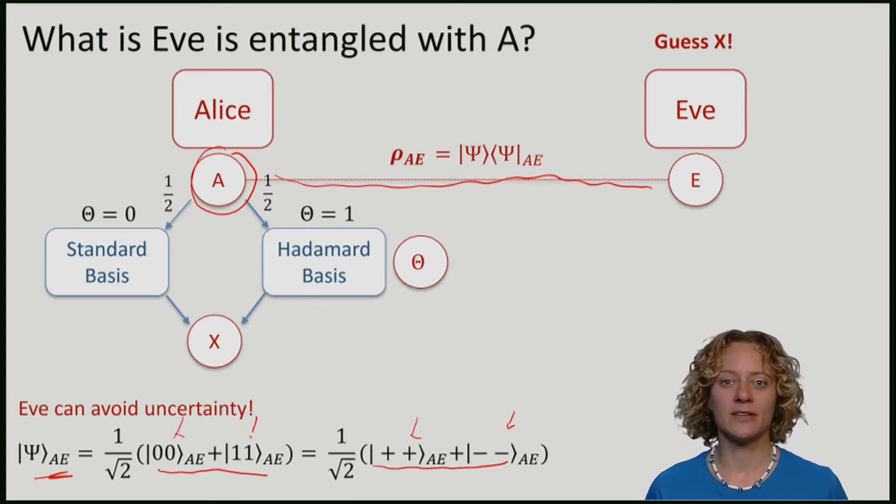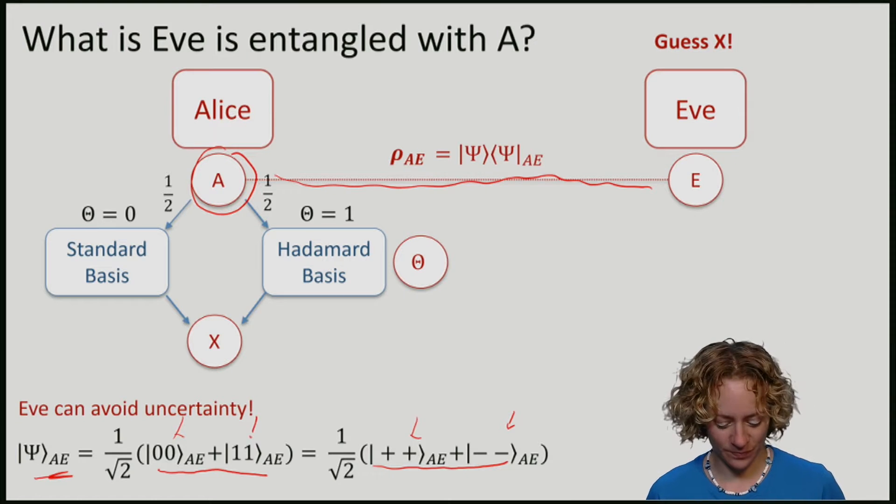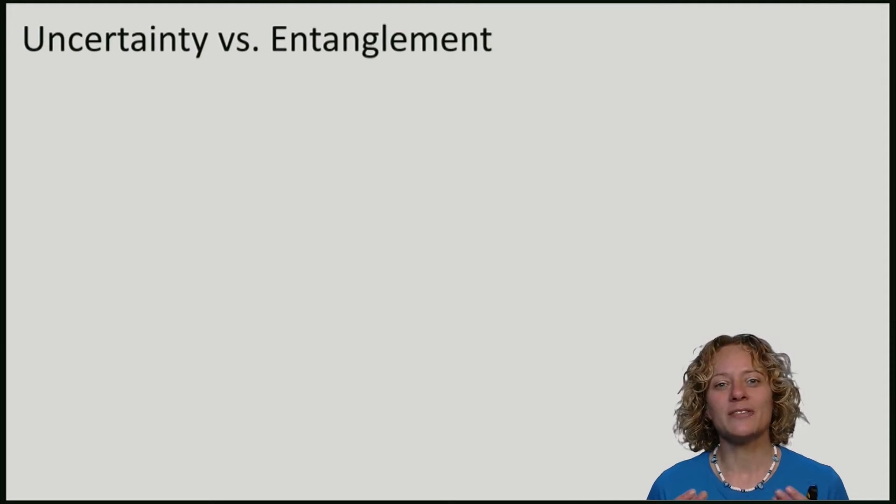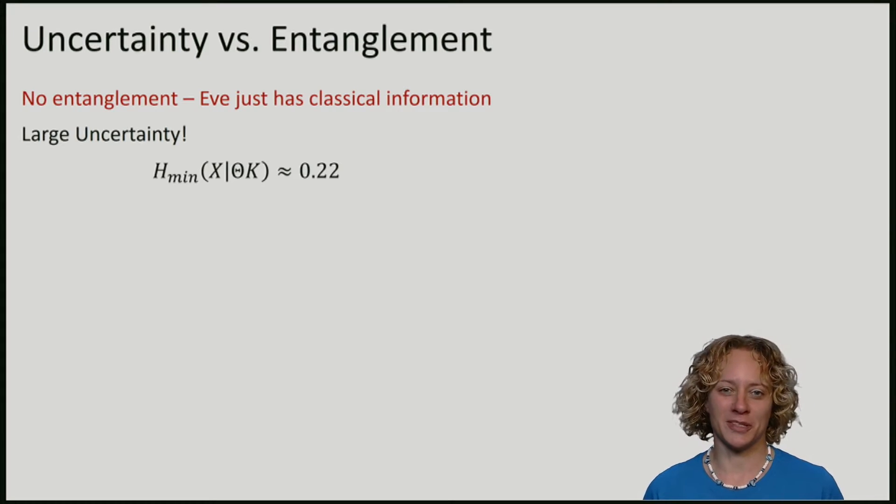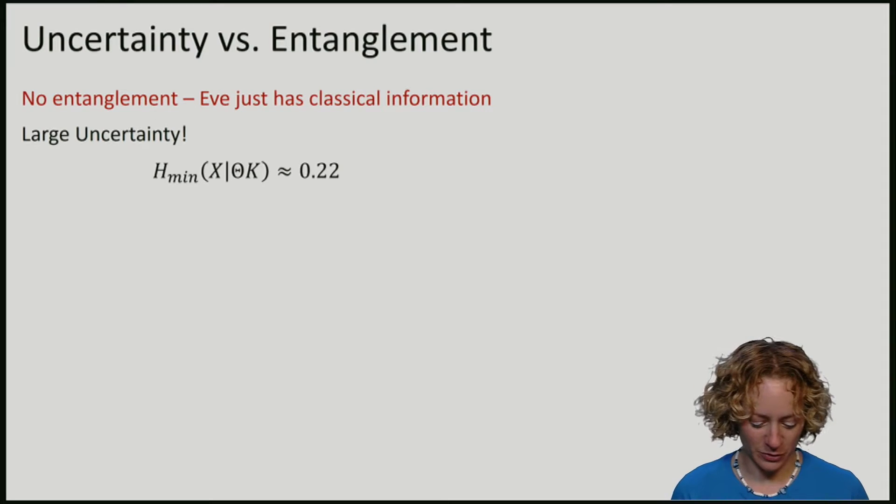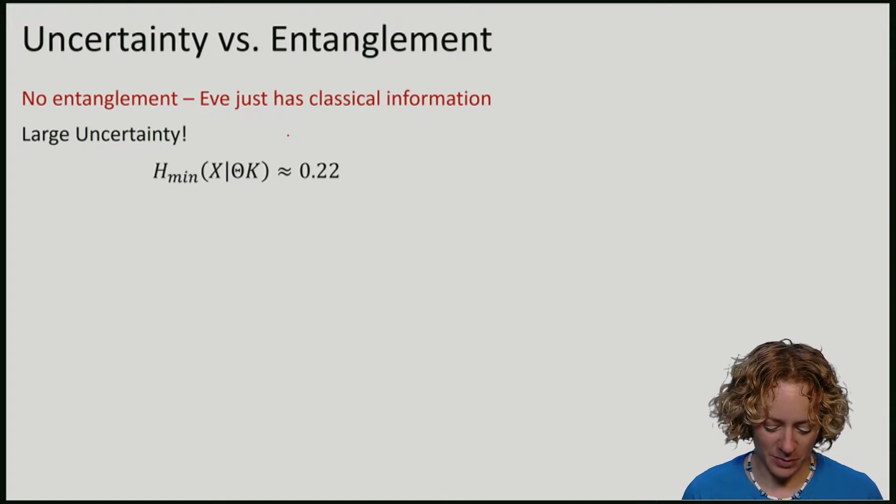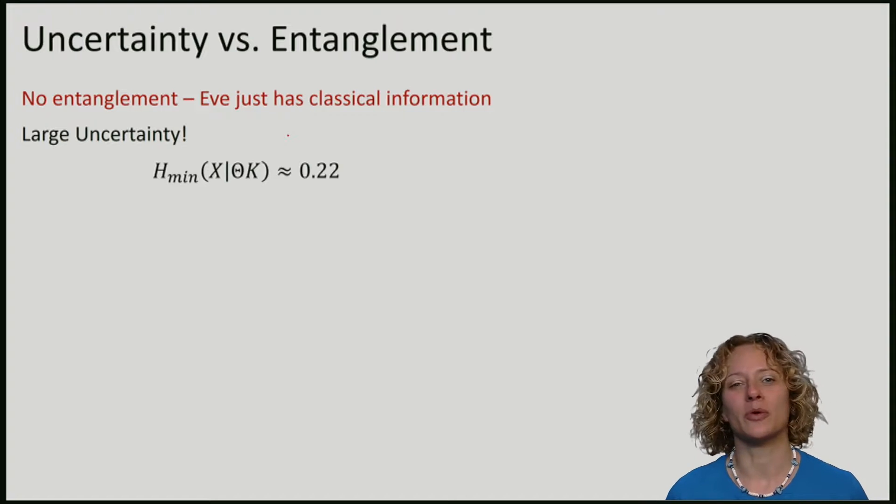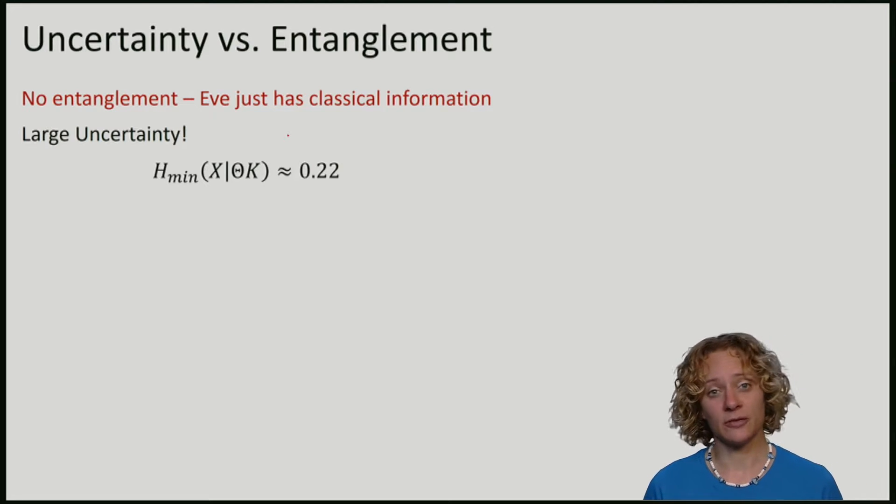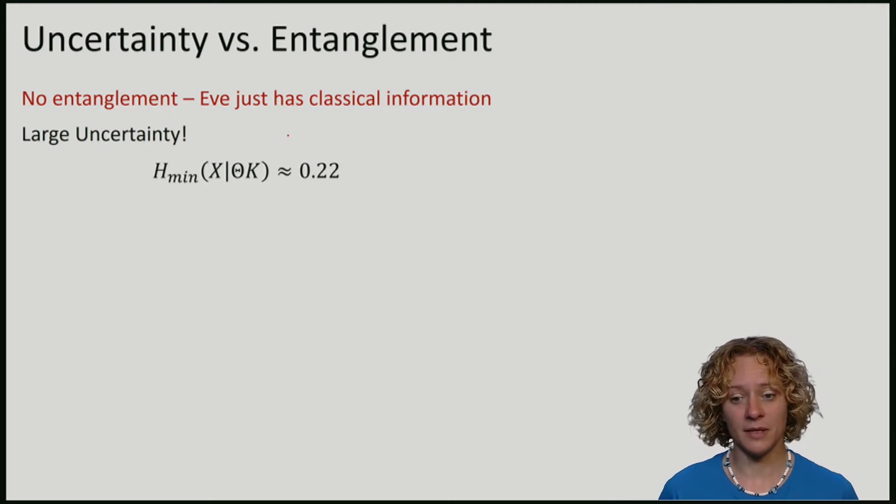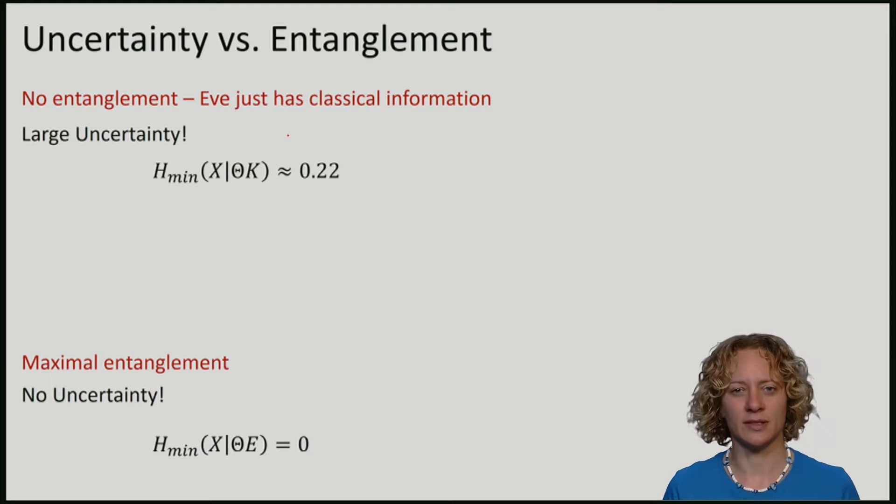We have seen that if there is no entanglement or if Eve just has classical information, then there is a large amount of uncertainty. In the example we consider, you might want to convince yourself that the min entropy is roughly 0.22. If there is maximum entanglement, there is no uncertainty. Eve can guess perfectly and the min entropy is zero.